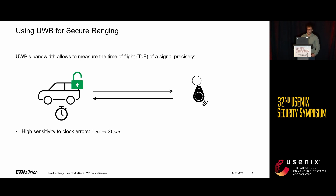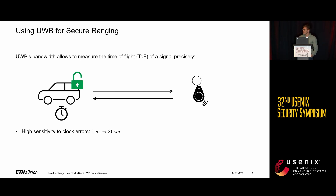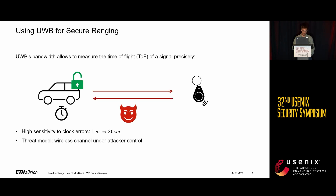What becomes apparent is that the whole thing is very sensitive to clock errors, because the speed of light by which these waveforms are transmitted needs about one nanosecond to propagate for 30 centimeters. Furthermore, these chips have rather cheap clocks, so errors exist and must be compensated for. The question is, if we assume a strong threat model with an attacker who completely controls the wireless channel and these compensation mechanisms, is there a way to exploit this to run distance reduction attacks?